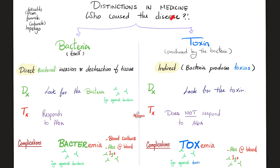Now we turn to diseases caused by staph aureus. Some are caused by the bacteria itself — you can give antibiotics. Others are caused by the toxins — do not give antibiotics, because antibiotics are anti-living organisms, not anti-toxins. If I order labs in bacteremia, I'll see antibodies against the bacteria. But in toxemia, I see antibodies against the toxin, not the bacteria. Once the bacteria has formed a toxin, even after you kill the bacteria, the toxin can persist — this is the idea behind many types of food poisoning.